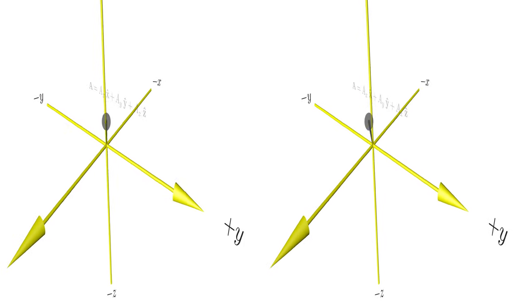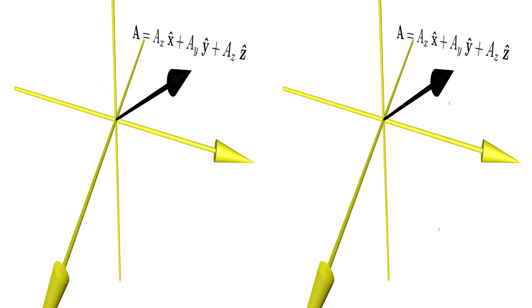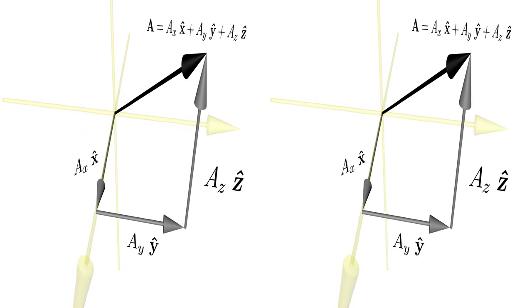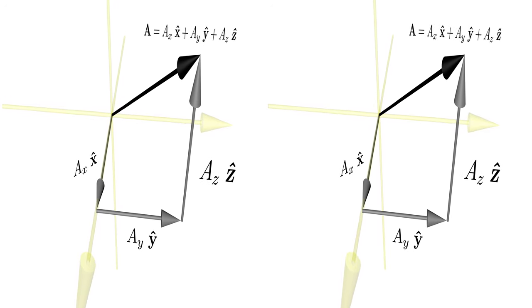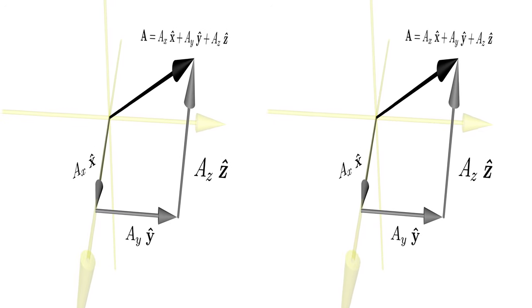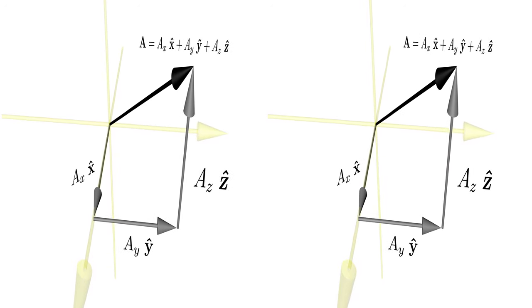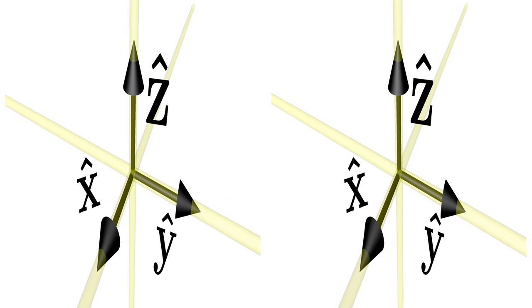Points in space are represented by vectors. Each vector has three components, where each component is in itself a vector along a particular unit vector. In the Cartesian coordinate system, any vector is the sum of a scalar quantity times the unit vectors in the x, y, and z direction. The unit vectors form an orthonormal set.